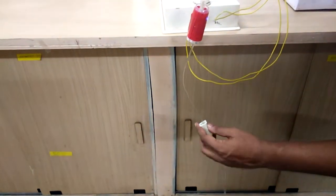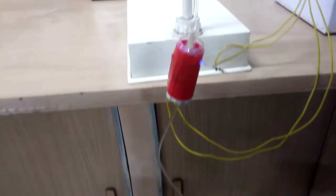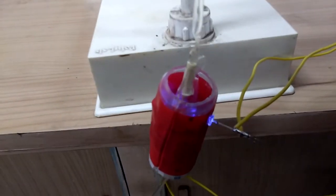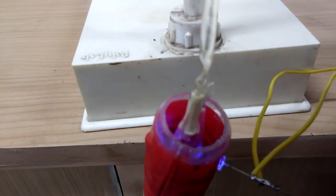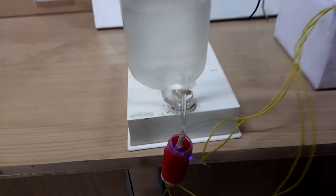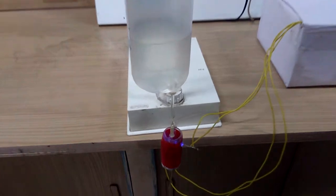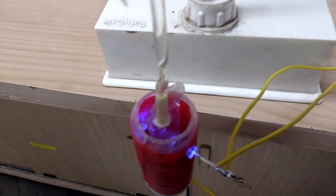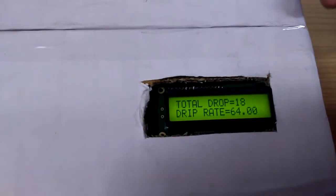As we move the clasp a little bit up the drops will start to flow. Here as you can see, it has started to measure the drops as well. Here it is showing total amount of drops and drip rate.